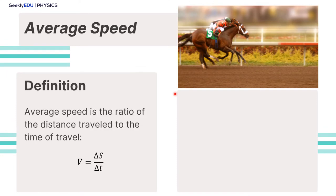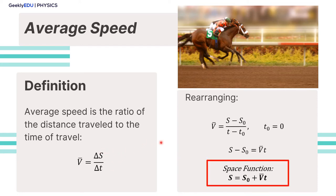Let's talk now about average speed. By definition, average speed is the ratio of the distance traveled to the time of travel. In other words, it's how much time you need to travel a certain space. If you take this equation and rearrange it, setting the initial time as 0 to make things simpler, we have the space function. The position where the object is right now equals the initial position plus the average velocity times time.